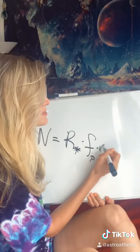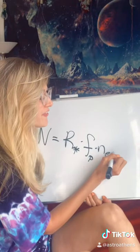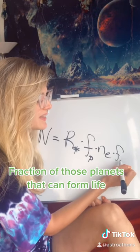That's multiplied by the number of those planets that have an environment suitable for life as we know it, and then by the fraction of those planets that can support life.